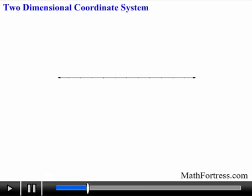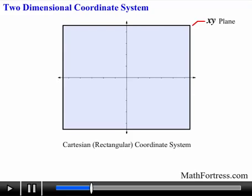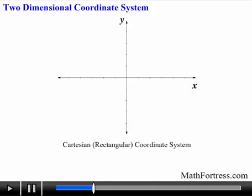Now if we take this number line and introduce an additional number line perpendicular to it, we obtain the modern coordinate system, also known as the Cartesian coordinate system, or the rectangular coordinate system. A two-dimensional coordinate system specifies each point uniquely in a plane — also known as the x-y plane — as opposed to a one-dimensional coordinate system which specifies each point on a straight line. As a result, a point on a two-dimensional coordinate system is described by a pair of numerical coordinates, also known as an ordered pair. Each coordinate describes the location of the point along each number line, which are commonly known as coordinate axes.